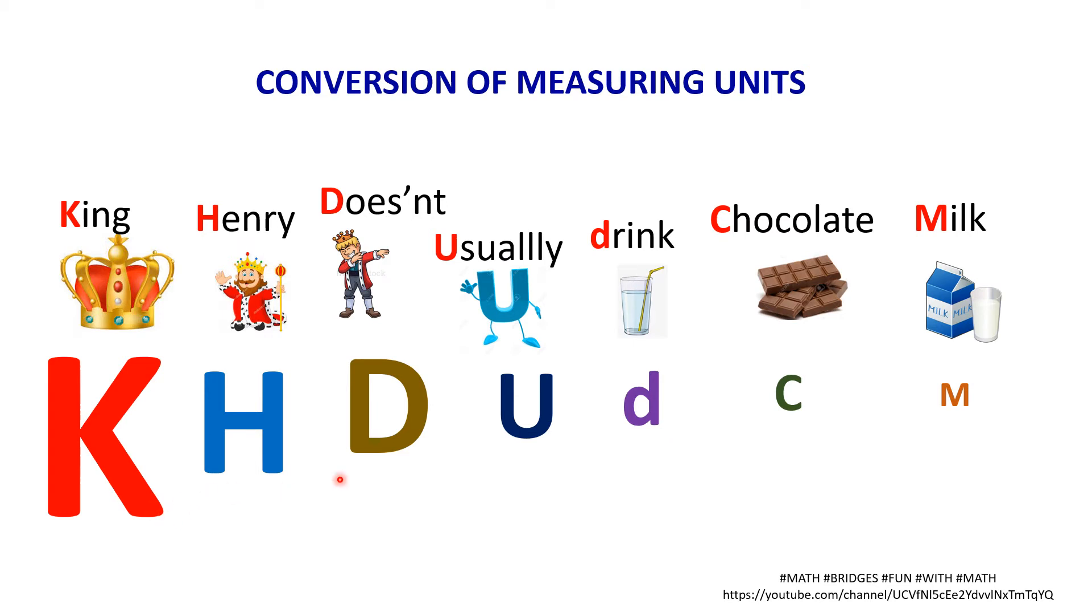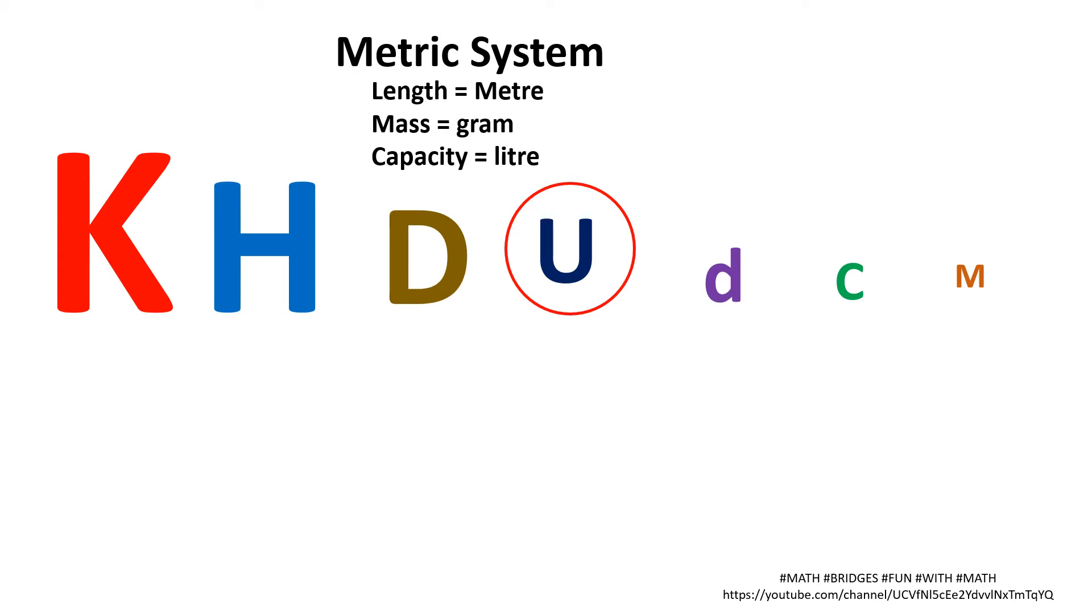So what does this K, H, D, U, D, C, M mean? Let's see. King Henry does not usually drink chocolate milk. K means kilo. Henry, H, means hecto. D means deca. Usually means U - it is a basic unit.